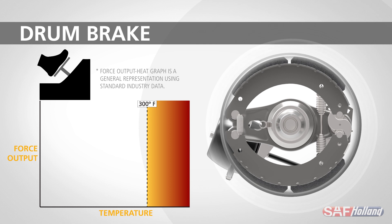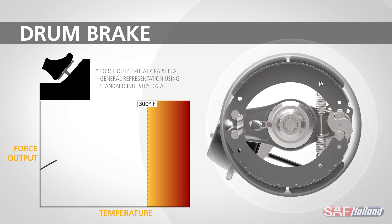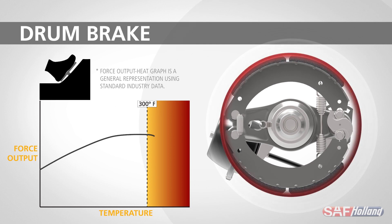If we look at a graph of what happens, we can see how the temperature increases as the driver applies more and more braking force over time. Once the 300-degree threshold is hit, the brake drum has expanded, and brake fade begins to occur almost immediately.